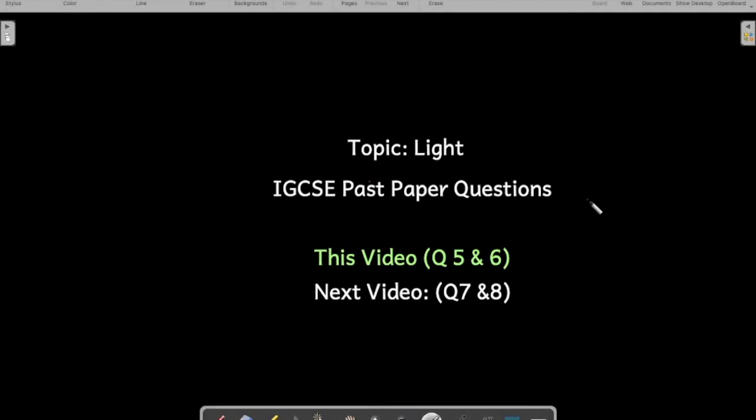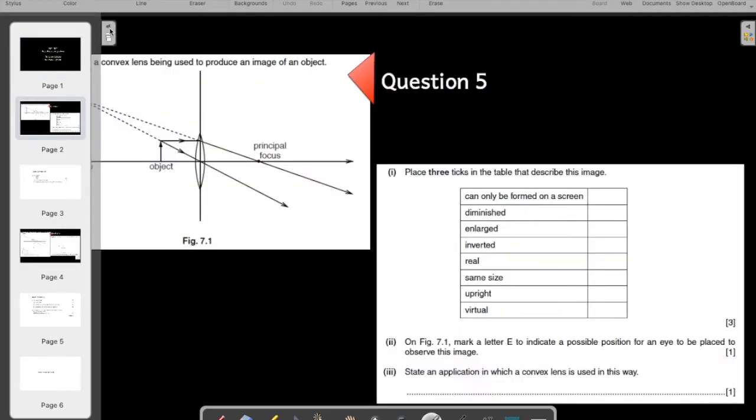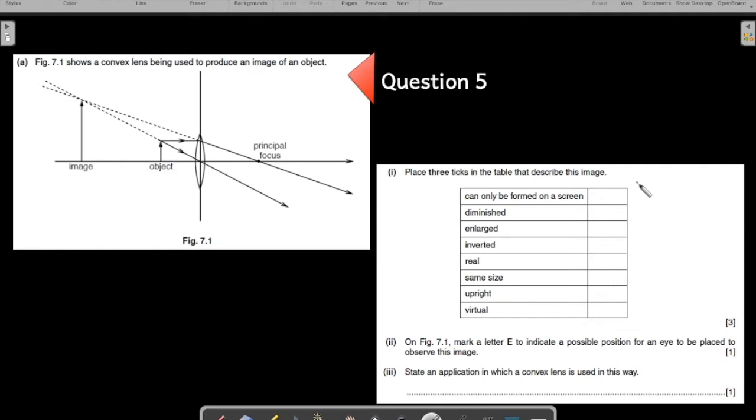Let us start with practicing a few more questions on light. These are your IGCSE past paper questions. This is question number five. Before this we have practiced a few more questions. This question relates to your magnifying lens or magnifying glass. The figure here shows a convex lens being used to produce the image of an object.